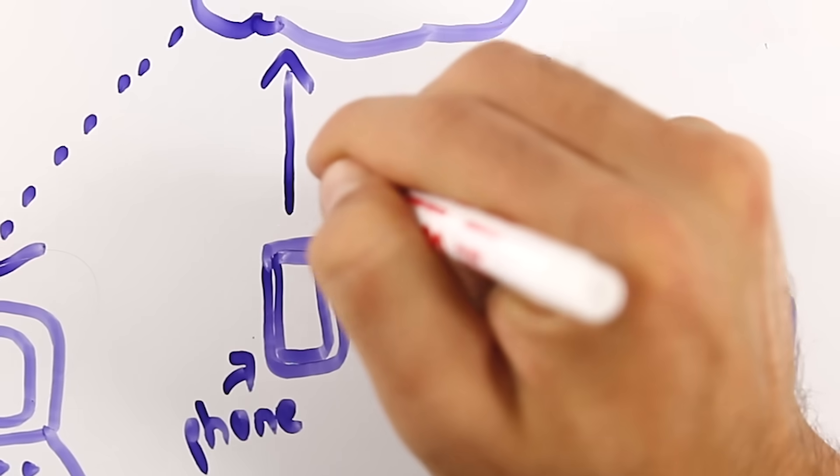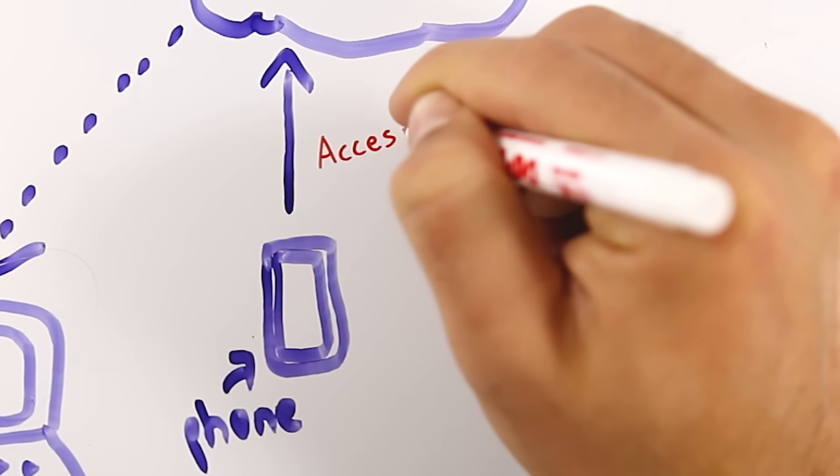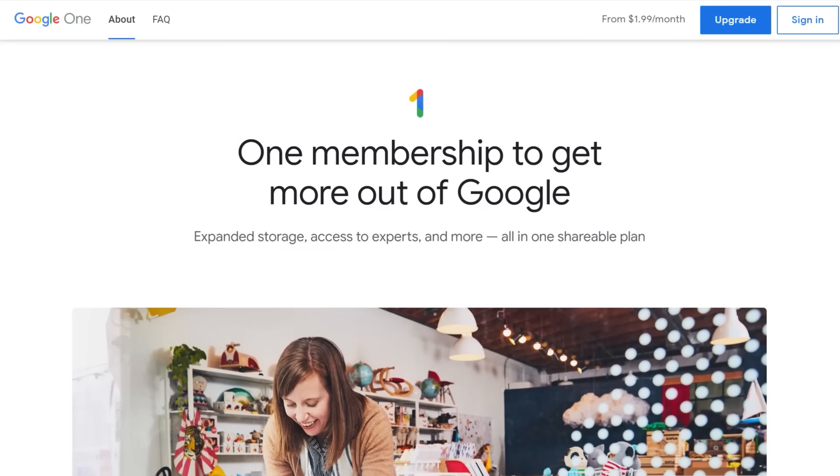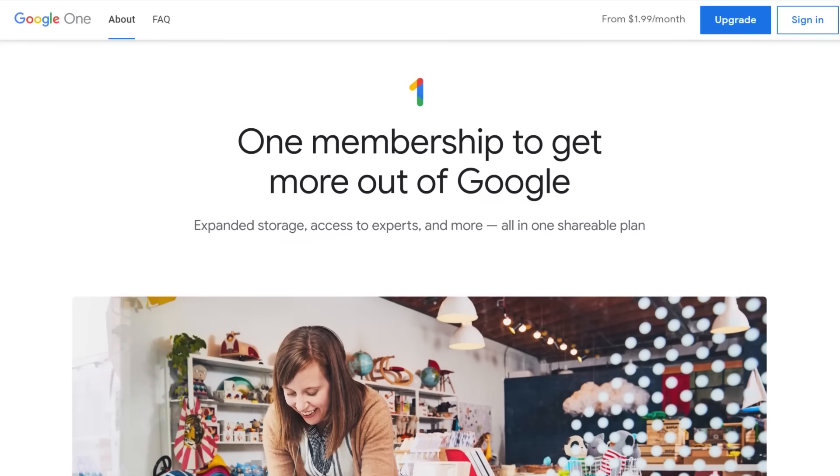Secondly, you have access to your files wherever you are — on your laptop, on your phone. I'm actually reading the script for this video off of my phone right now. You even have access on any computer in the world, as long as you can log into your Google or Dropbox account and download those files. So that brings us to the question: which cloud sync app should you use? I'm going to recommend Google One for most people.